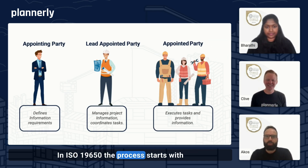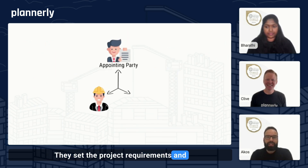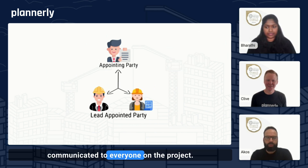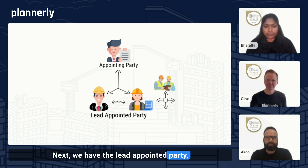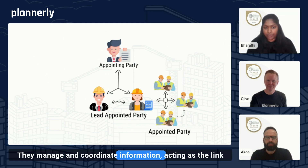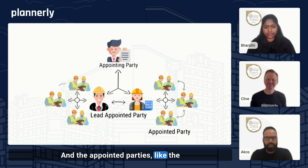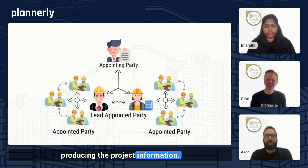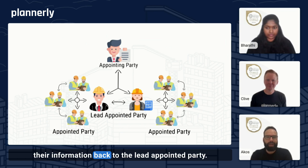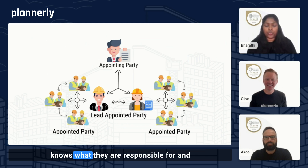In ISO 19650, the process starts with the appointing party, typically the client. They set the project requirements and make sure that clear responsibilities are communicated to everyone on the project. Next, we have the lead appointed party, usually the main contractor or lead designer. They manage and coordinate information, acting as the link between the appointing party and the other teams. The appointed parties, like the subcontractors and consultants, are responsible for producing the project information. They work on their specific tasks and send their information back to the lead appointed party. This flow of information ensures that everyone knows what they are responsible for and how the information moves between the teams.